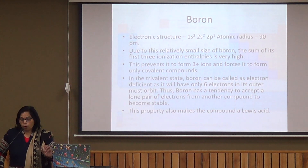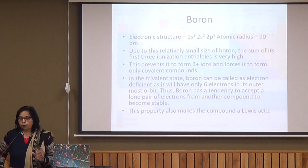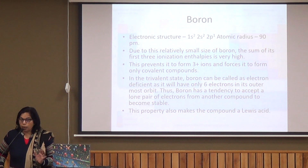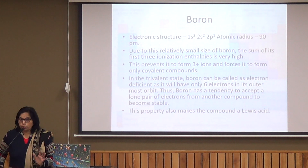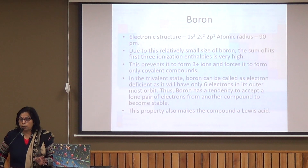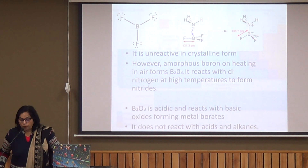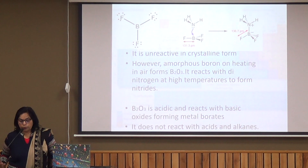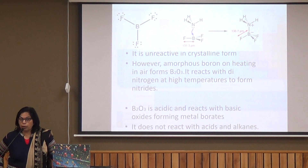The important properties of boron: due to its very small size, it needs very high ionization energy. The sum of all three ionization energies is very high compared to other elements of this group. It does not show a +3 ionic oxidation state but shows three covalency, meaning its three outermost electrons participate in making covalent bonds. It is unreactive in crystalline form — also because of its small size. On heating it forms B2O3, but at low temperature it is unreactive.